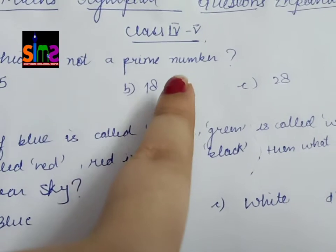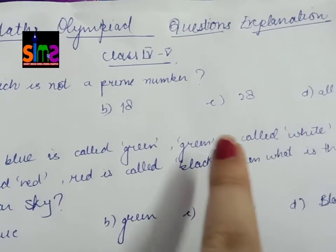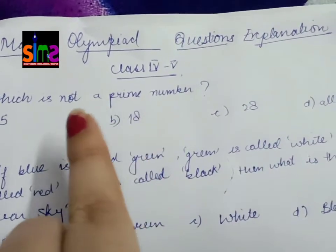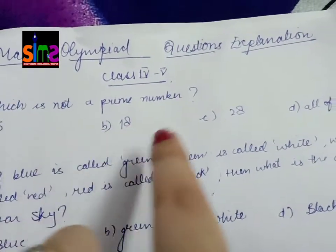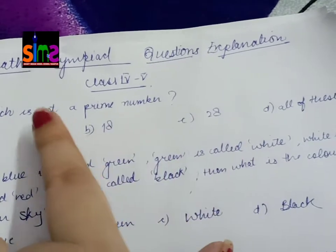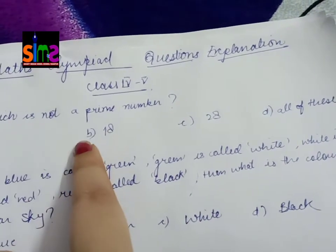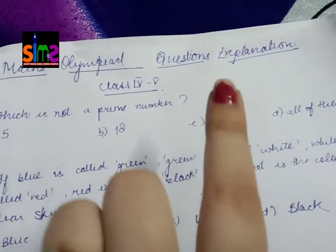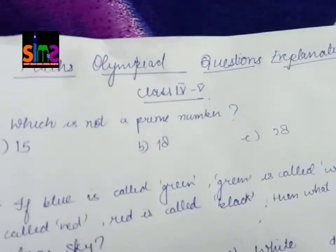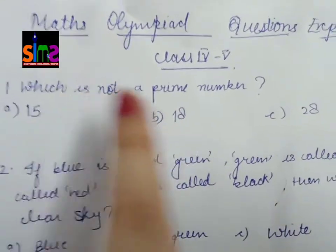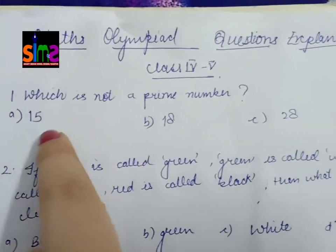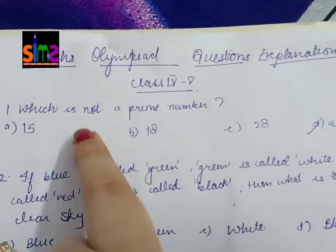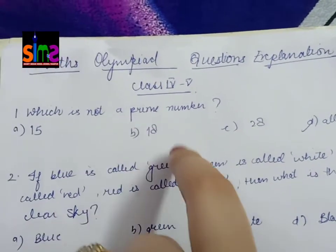The first question I gave was which is not a prime number, with options A, B, C, D. You have to choose one option and write only the answer, not the question. Just write the answer. You need to check which is not a prime number. Prime numbers have only two factors: one and the number itself.